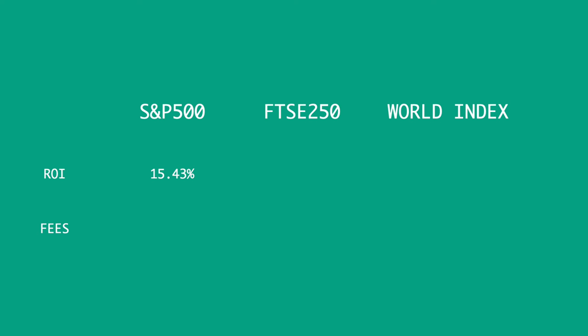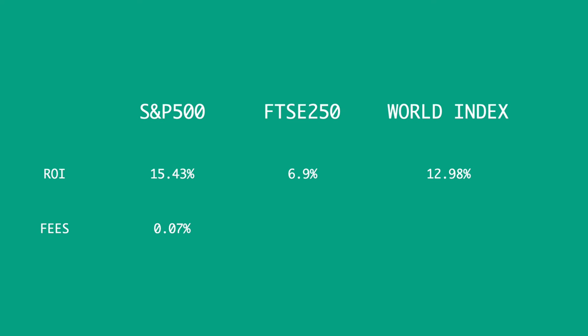The S&P 500 five-year average return is 15.43%, the FTSE 250 is 6.9%, and the All World fund is 12.98%. One important element not yet discussed is the fees — also referenced as an OCF or ongoing charge fee. The S&P 500 is 0.07%, the FTSE fund is 0.1%, and the All World fund is slightly more expensive at 0.22%. So for pure return on investment, the S&P 500 ETF certainly takes the win.